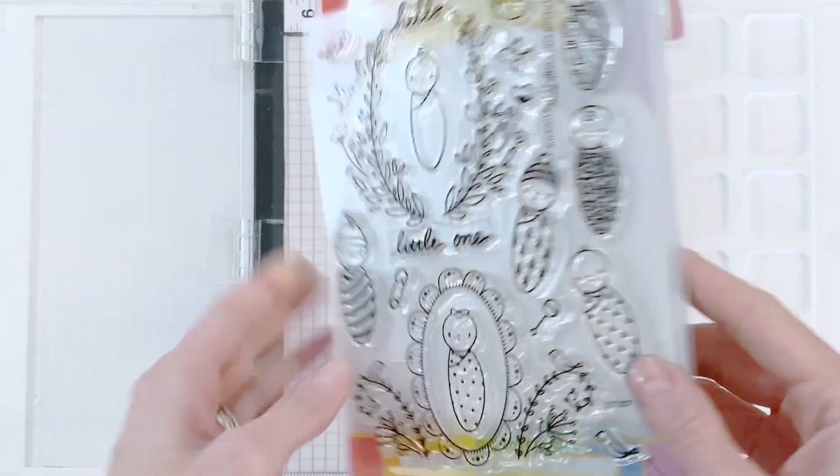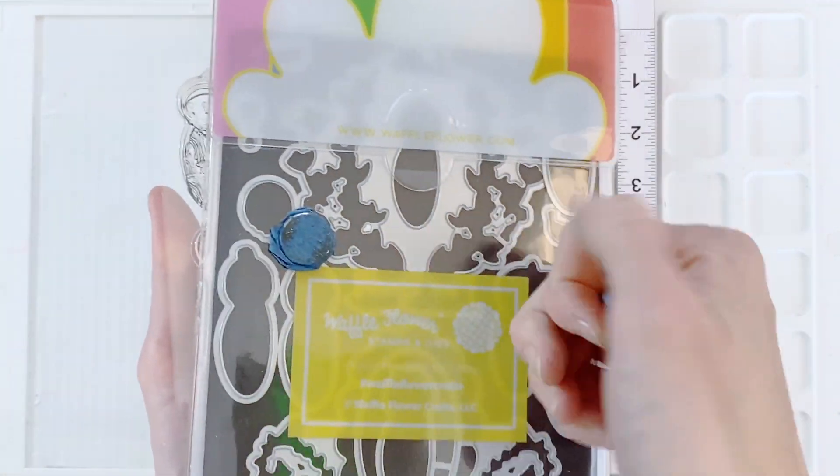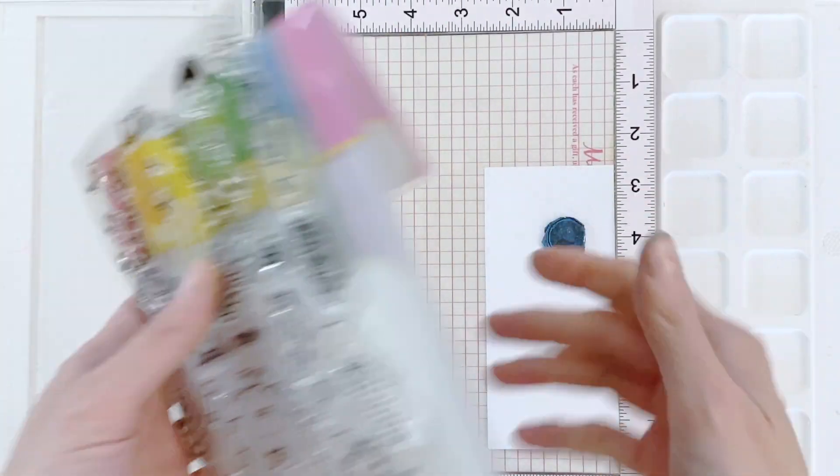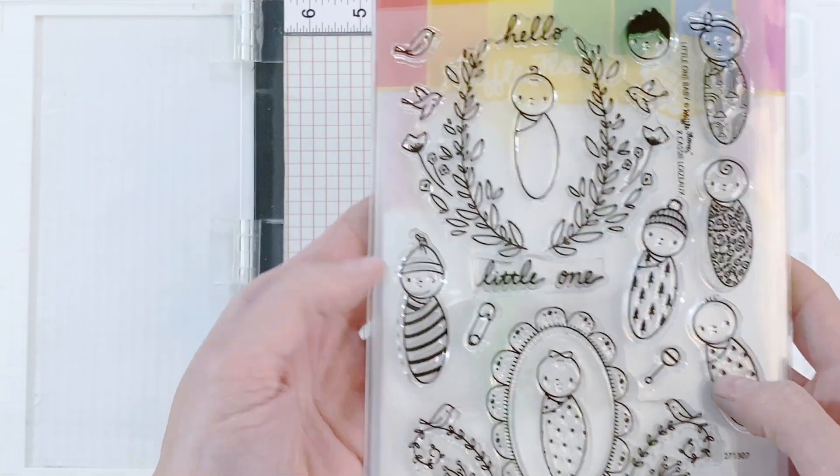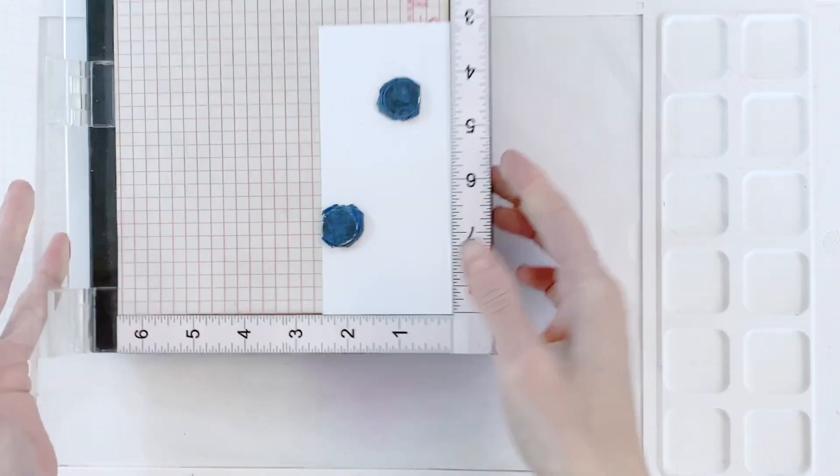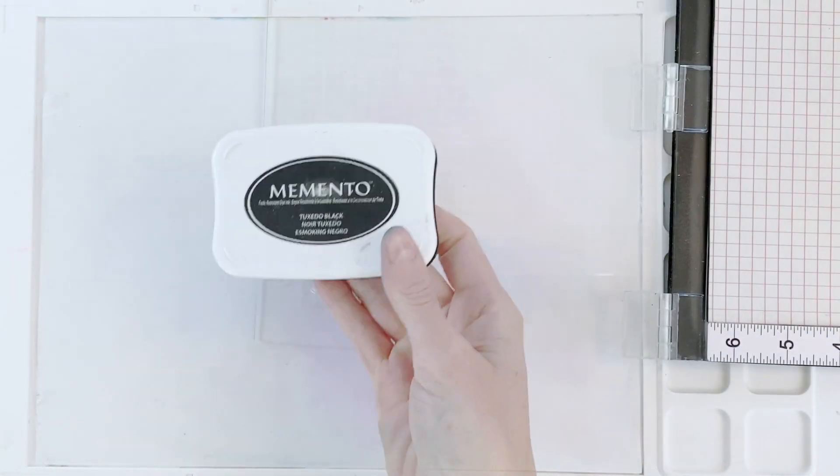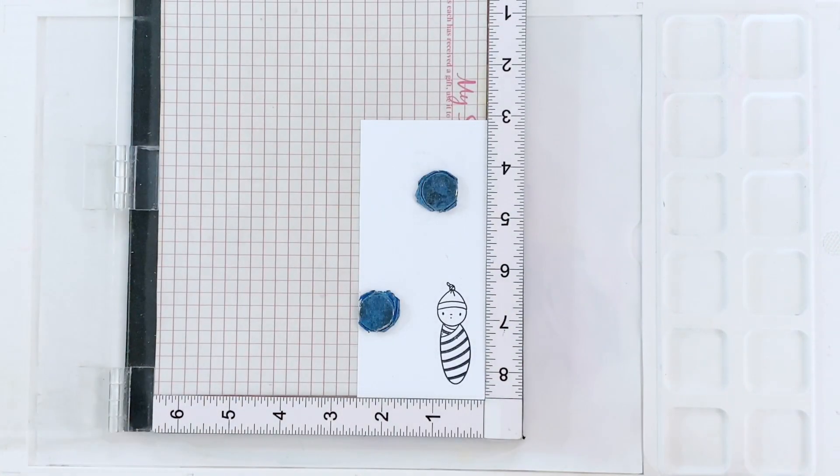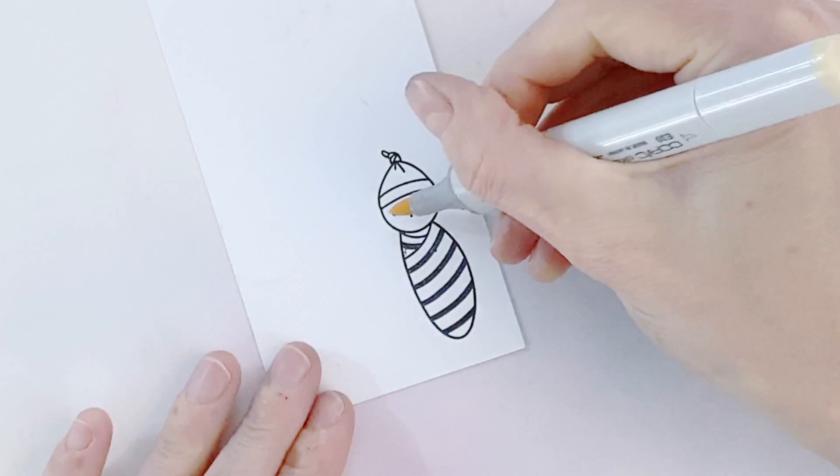I'm now going to move on to stamping one of the babies from the Little One Baby combo set. The combo set comes with the Little One Baby matching dies in the back and the Little One Baby stamp set in the front. I've pulled off the baby that has a striped blanket and I'm going to ink up this baby with Memento Tuxedo Black which is a Copic friendly ink. Because I'm going to do some Copic coloring now.